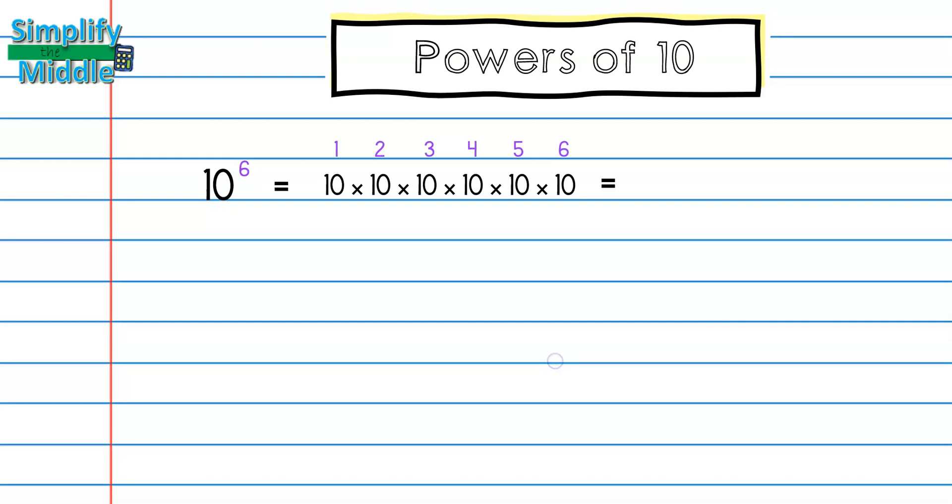So I will write 1 followed by 6 0s. That's going to give me 1 million.